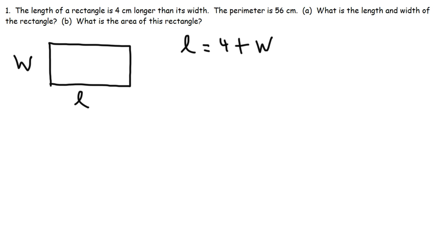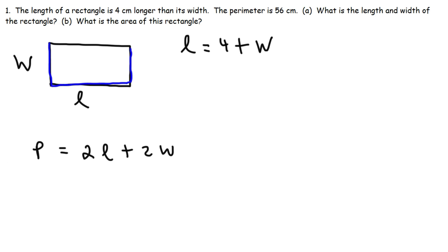Notice that we have two variables in this equation, so we can't solve for L or W right now. Whenever you have an equation with two variables, you need another equation to find those two variables. If you have two variables, you need two equations; if you have three variables, you need three equations. The other equation is the perimeter equation: perimeter equals 2L plus 2W.